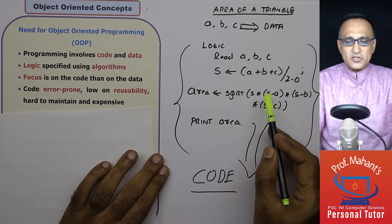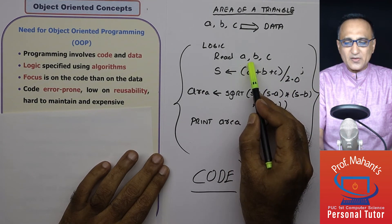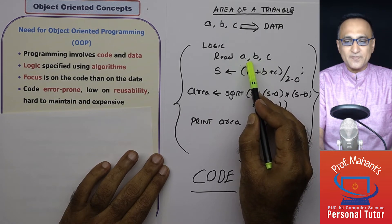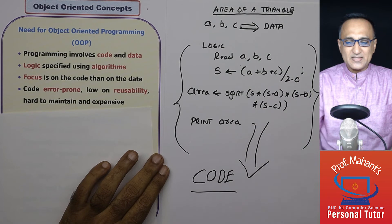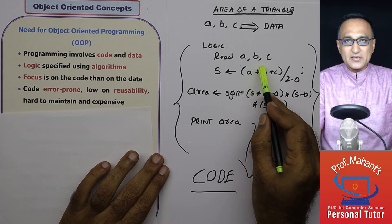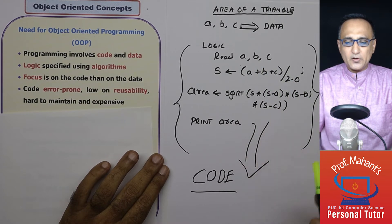Then my logic will say, ask the user to enter the values of three sides and I read it into three memory locations with the names A, B and C. Then I need to calculate the half perimeter which is the sum of A plus B plus C divided by 2.